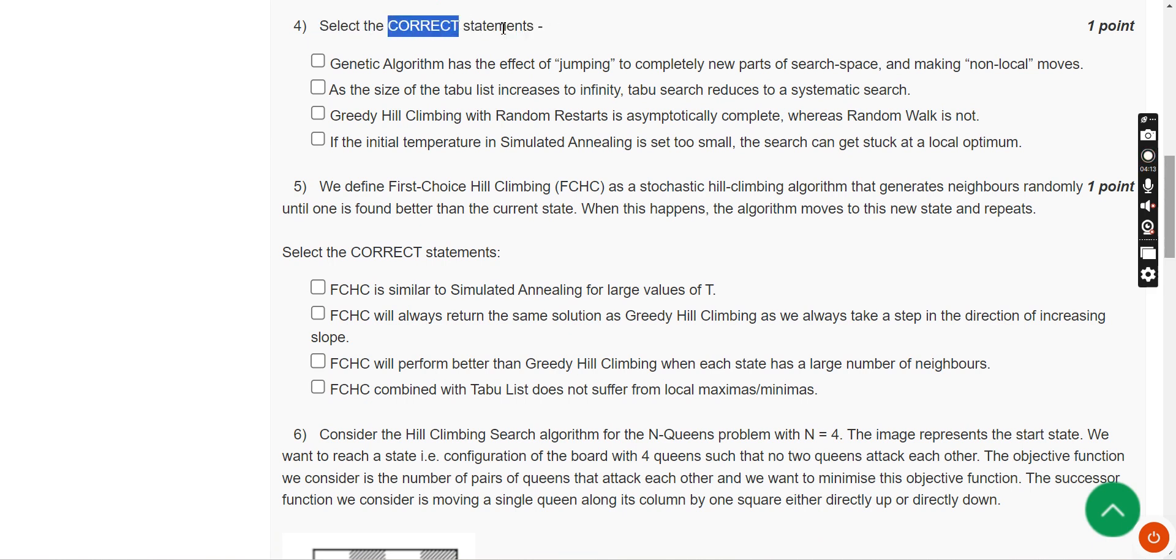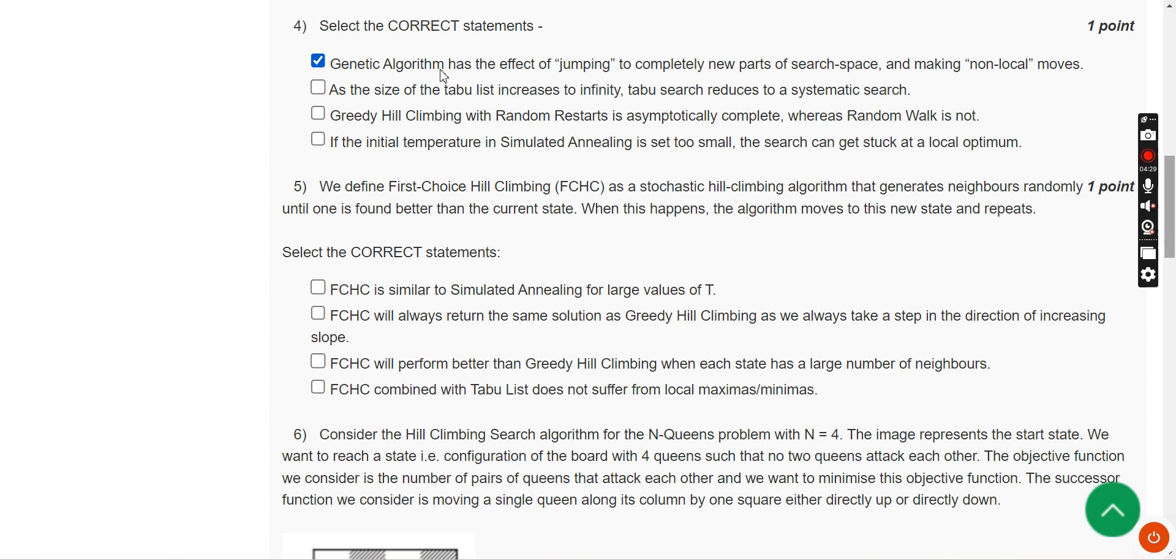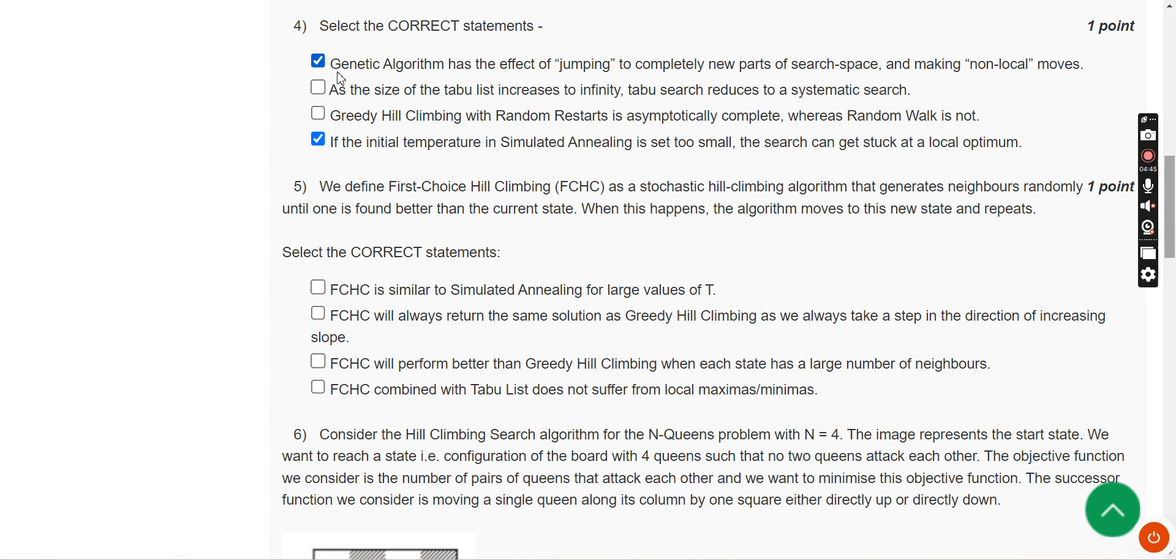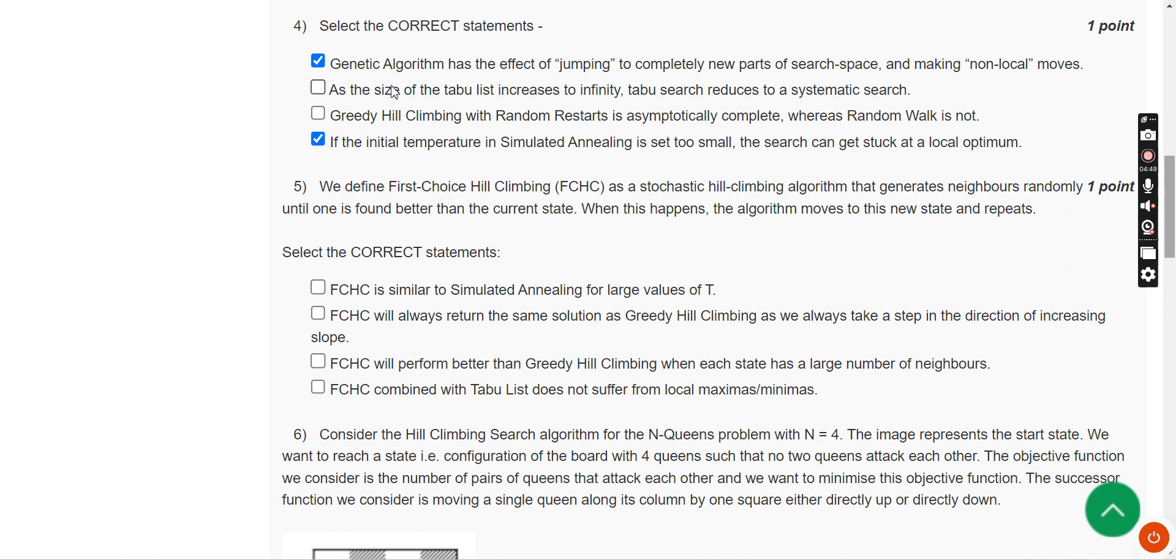Fourth question: select the correct statements. For the fourth question I have got two correct statements. The first one is the first option itself: genetic algorithm has the effect of jumping to completely new parts of search space and making non-local moves. The other one is fourth option: if the initial temperature in simulated annealing is set too small, the search can get stuck at a local optimum or minimum. I have got these two as the probable correct statements for this fourth question.